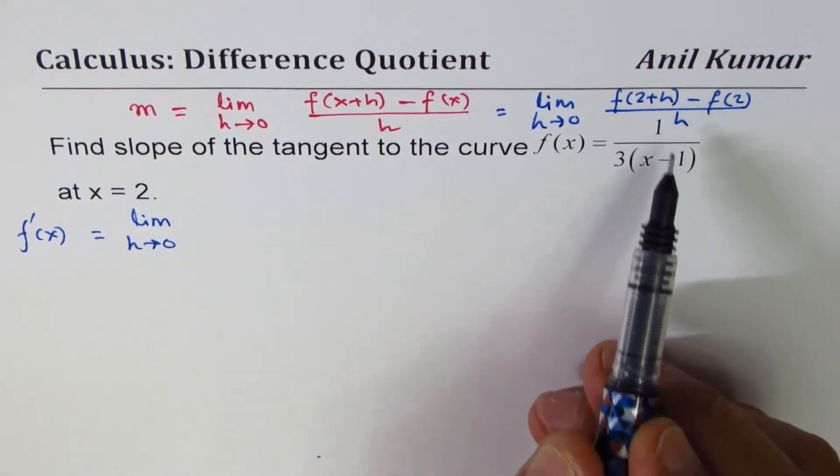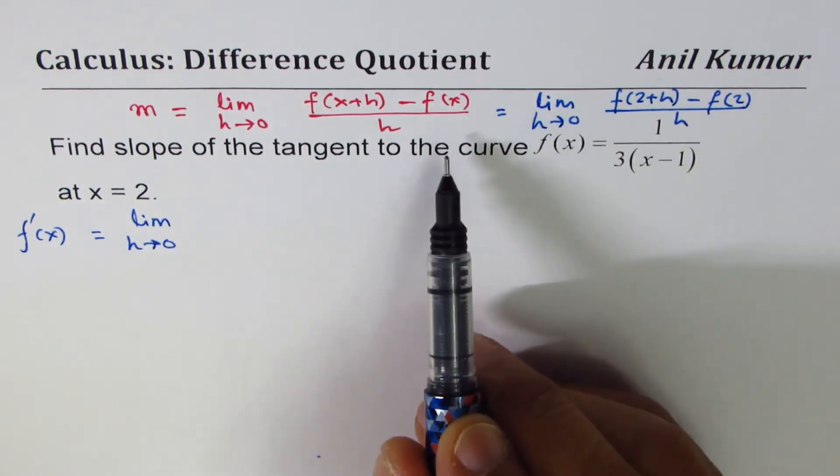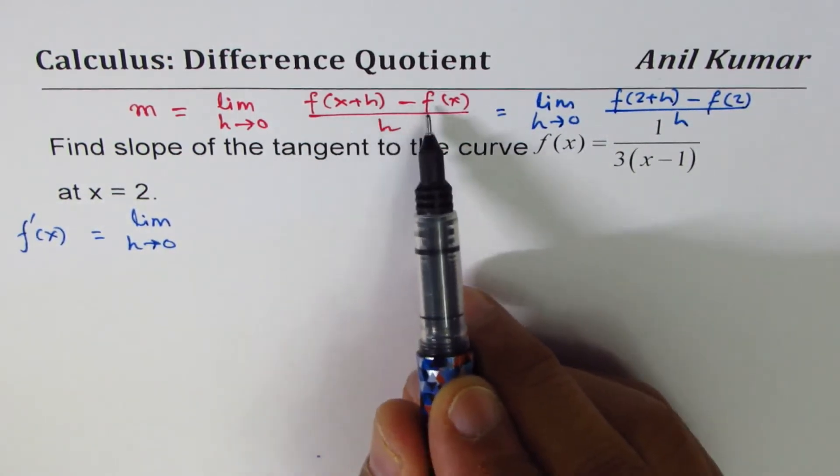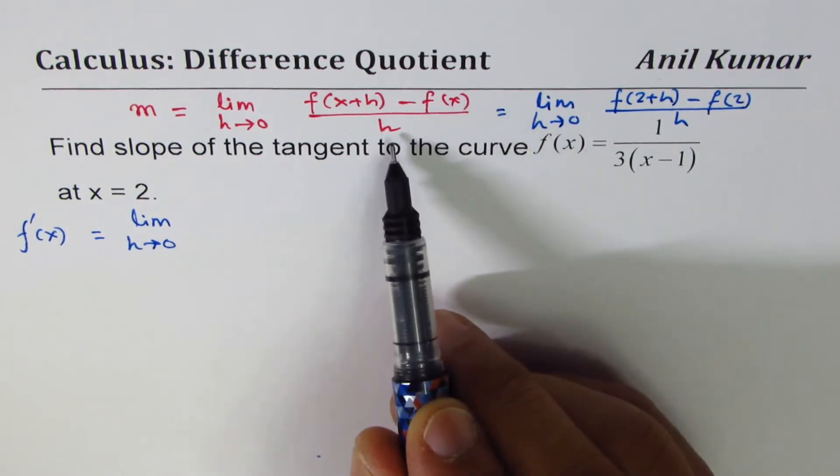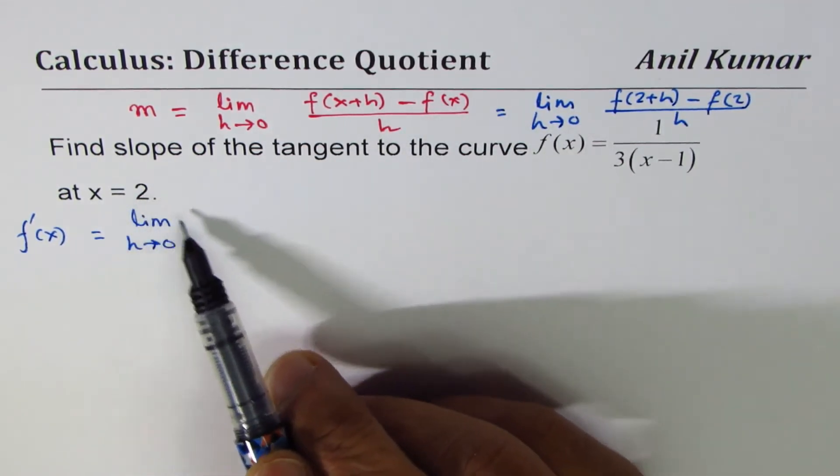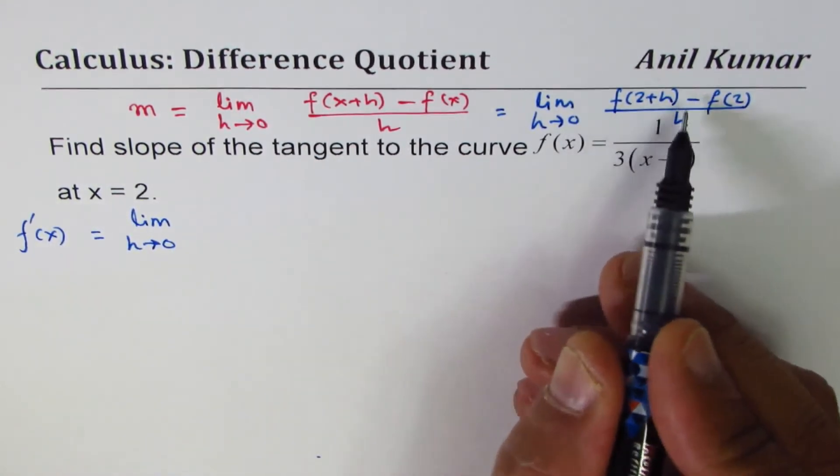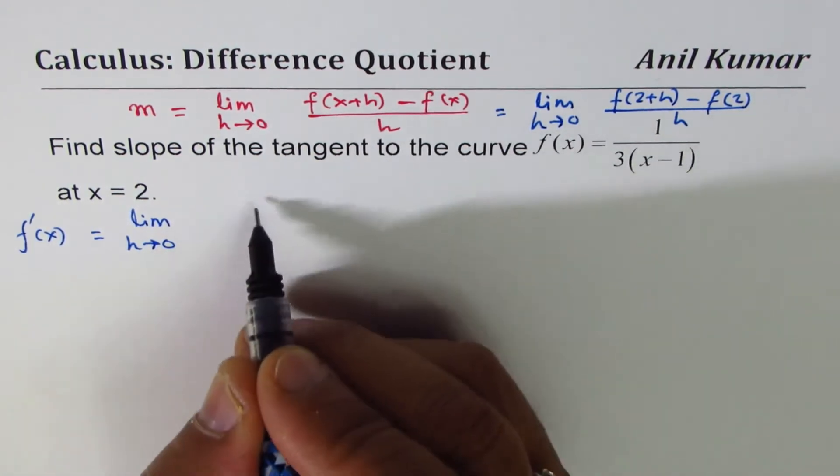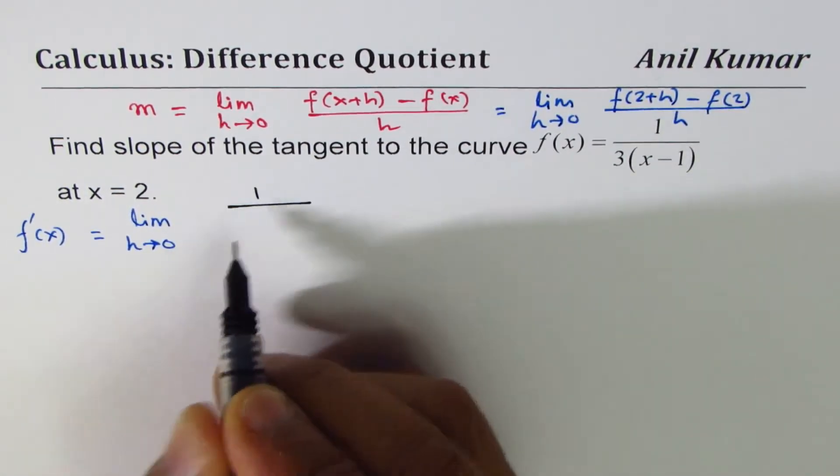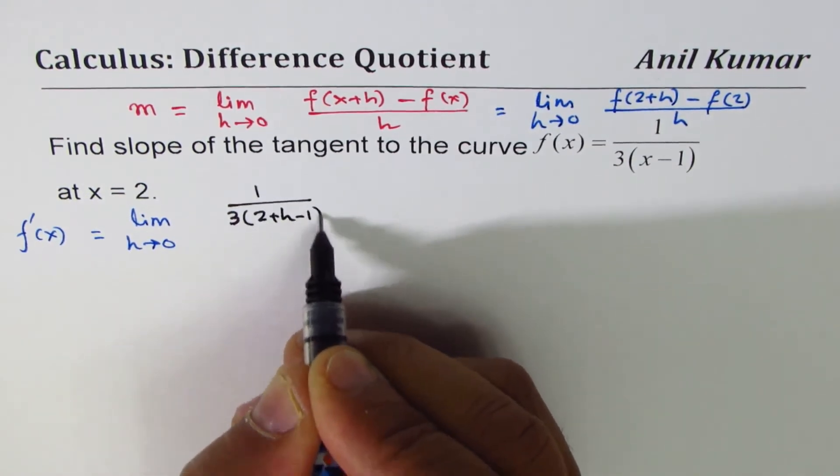What we will do here is we'll actually substitute 2. We'll use this equation which is f(a+h) minus f(a) divided by h, replacing x with the point given to us. If I write 2+h for x, I get 1/(3(2+h-1)) minus f(2), 1/(3(2-1)), divided by h.